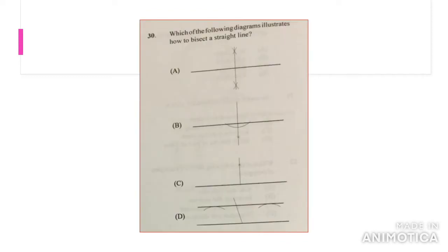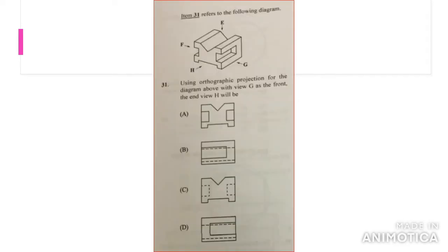Which of the following diagrams illustrates how to bisect a straight line? The answer would be A because you need your compass on both sides of the horizontal line to strike your arcs above and below that horizontal line.